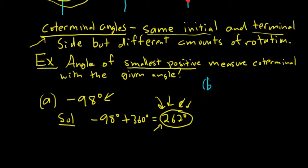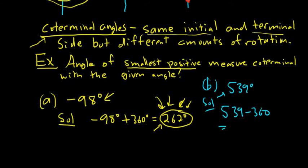Example B: 539 degrees. We want the smallest positive angle coterminal with this. If we add 360, we get a coterminal angle but it'll be bigger. So we subtract 360: 539 minus 360 equals 179 degrees. If we subtract 360 again, we get a negative angle, which doesn't work since it has to be positive. So the answer is 179 degrees.